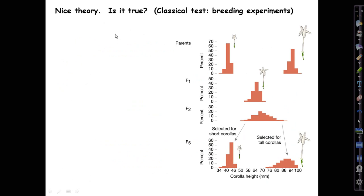Nice theory, let's pull back a little bit and ask is it true? The classic tests come from breeding experiments, and here's East's flower height in the Nicotiana experiment itself, the real thing.